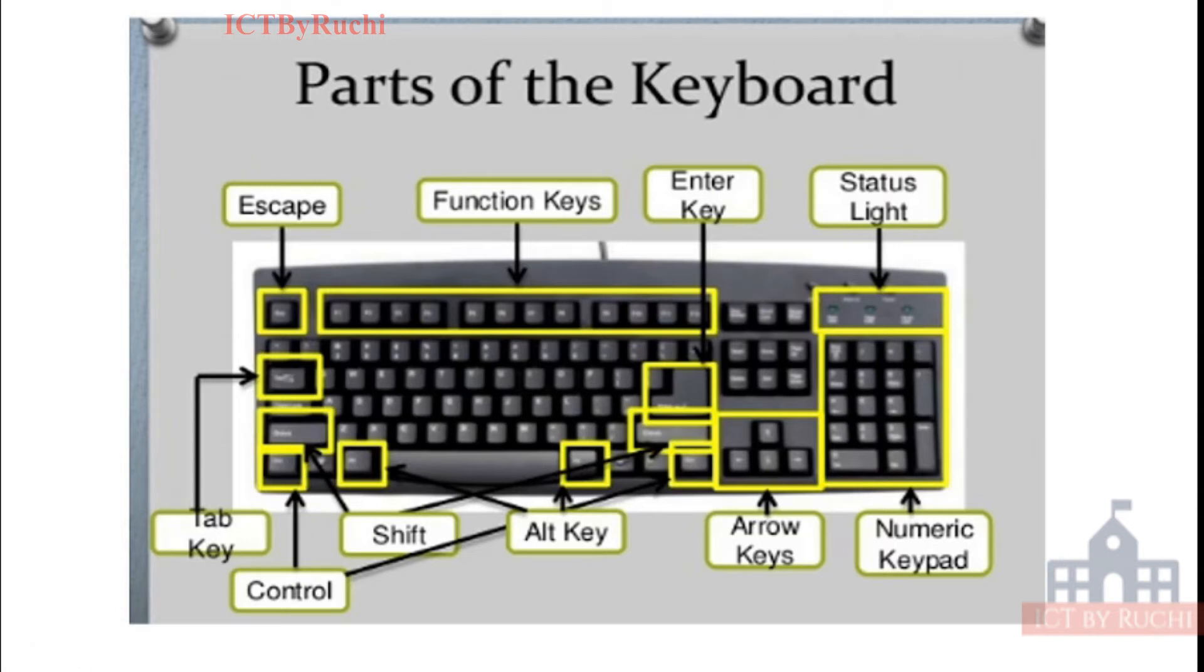These keys have different operations. Sometimes it makes a letter capital, sometimes it makes the letter small. Sometimes it is used to use the operations which is written above the number. Like above 1, we have exclamation. Above 2, we have at the rate. Above 3, we have hash. So to use the keys which is above the number, we use the shift, control, alt keys.